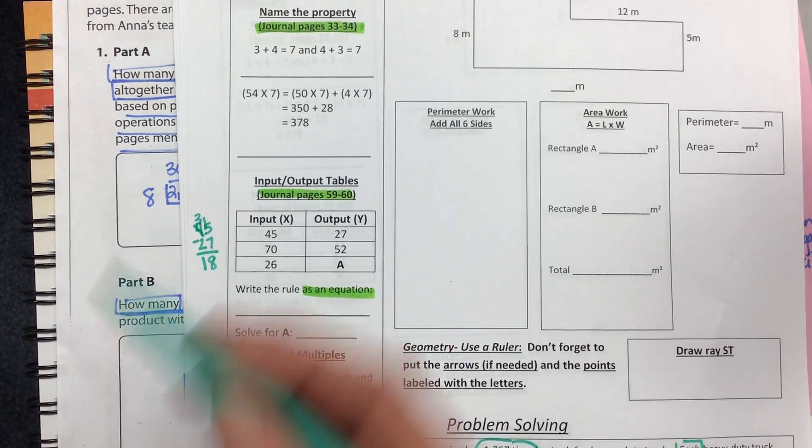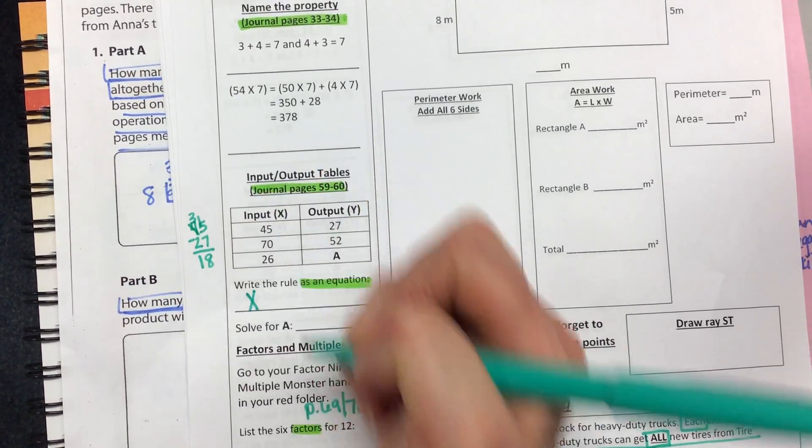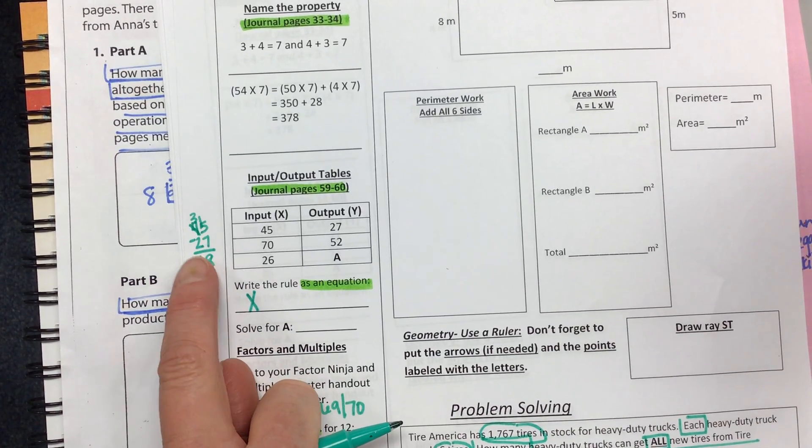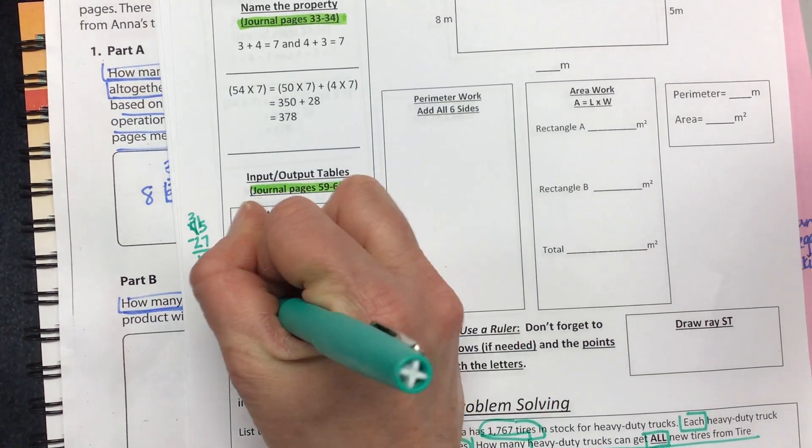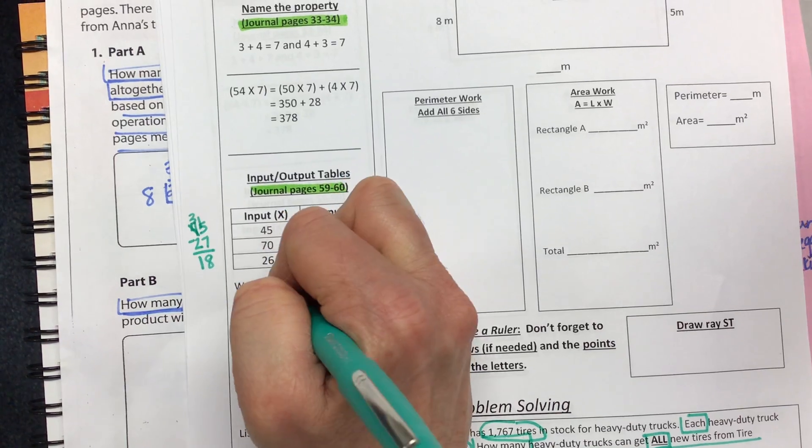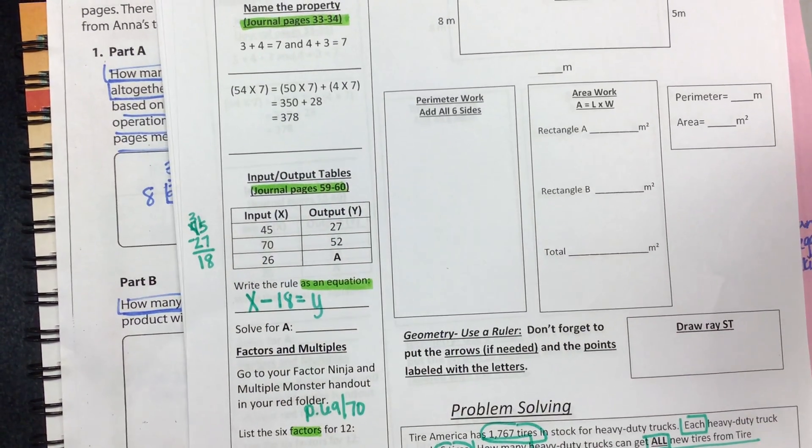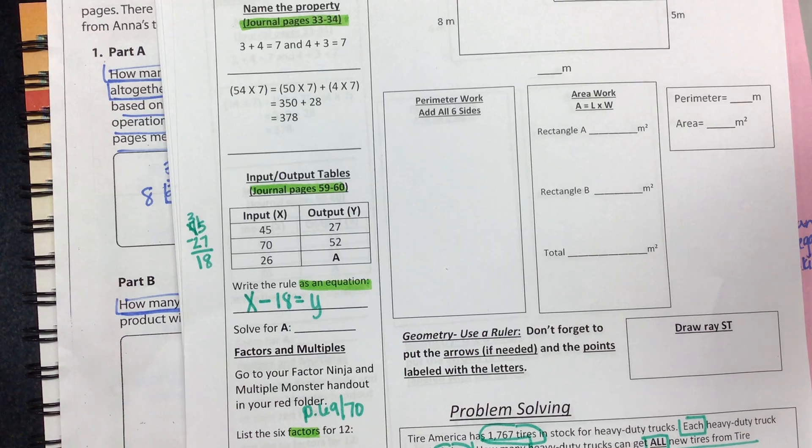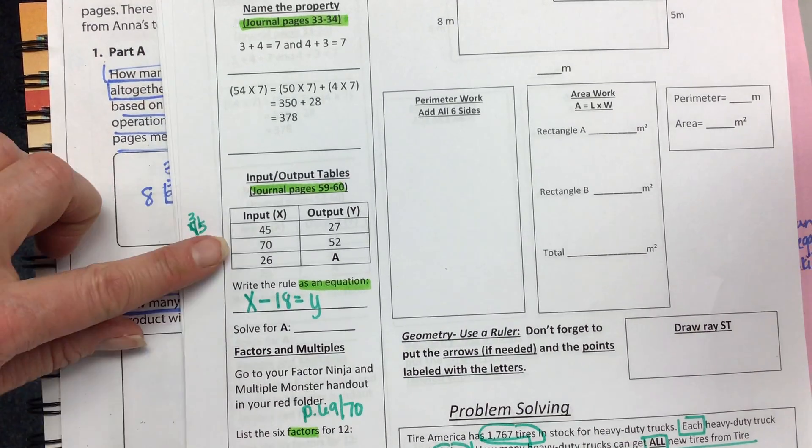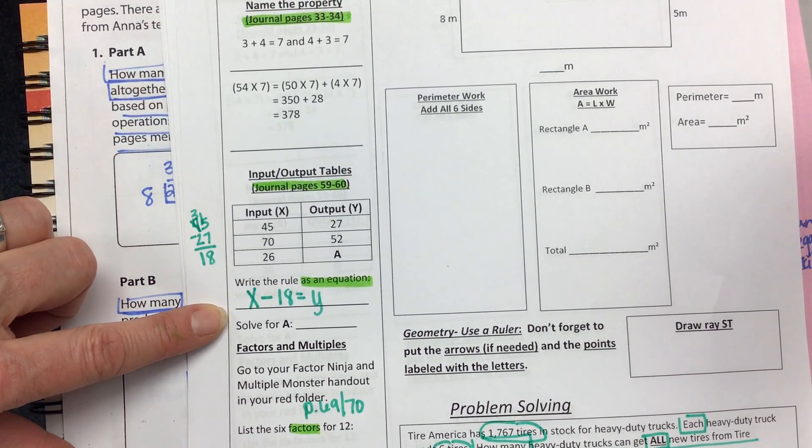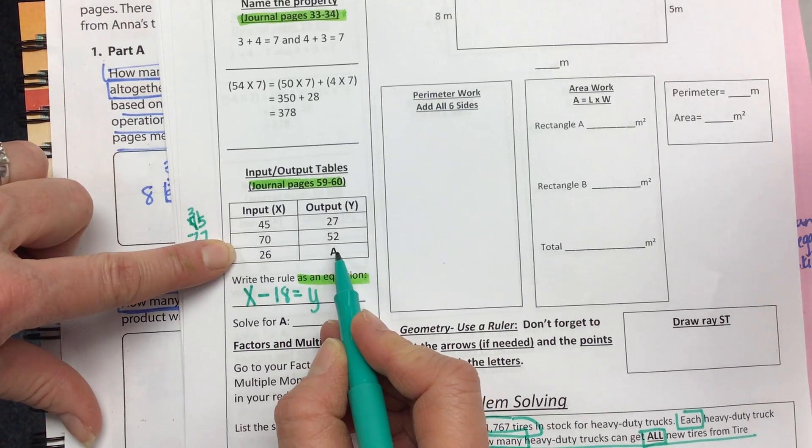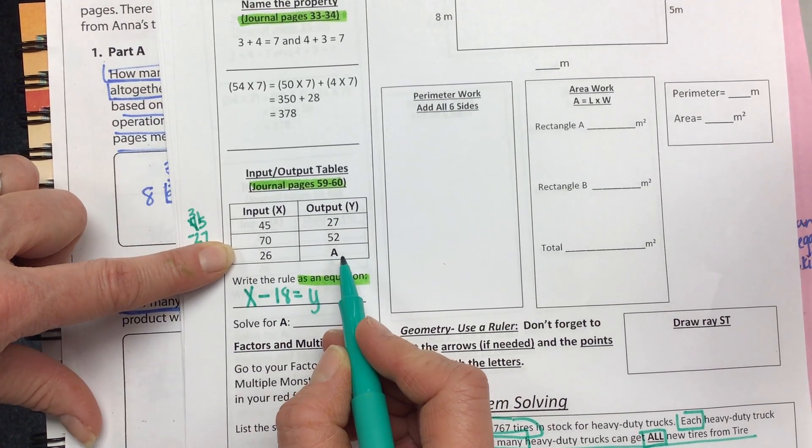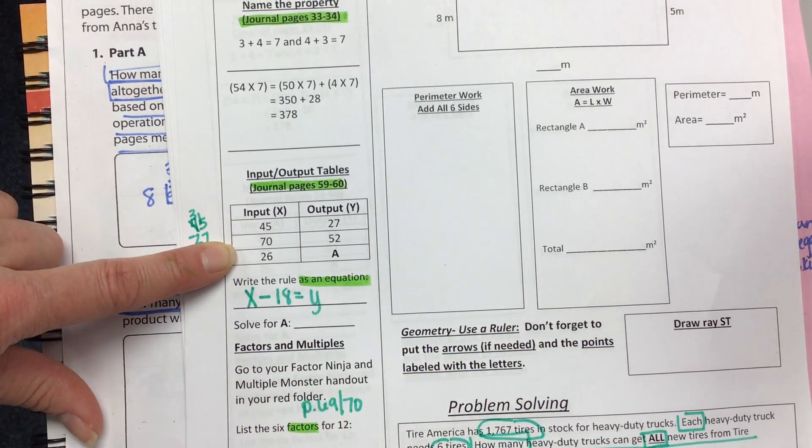But I have an x and a y. How do I write that as a function, Gracie? Not times. What do we do? Excellent. Good job, Gracie. I appreciate your hand going up in the air and you putting some effort into that. X minus 18 equals y. So then, how do we solve for a? I'm not going to do that one for you. You can do that one on your own.